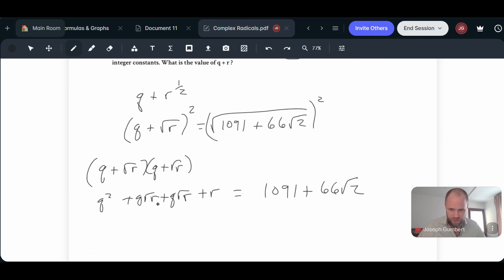So what I can do from here is combine these. And I'm going to combine it in a way that I keep the radicals all the way on the right and I keep the rational numbers all on the left. So I'm going to do q squared plus r on the left side, and then that's going to be 2q root r. And then that's going to equal 1091 plus 66 root 2.